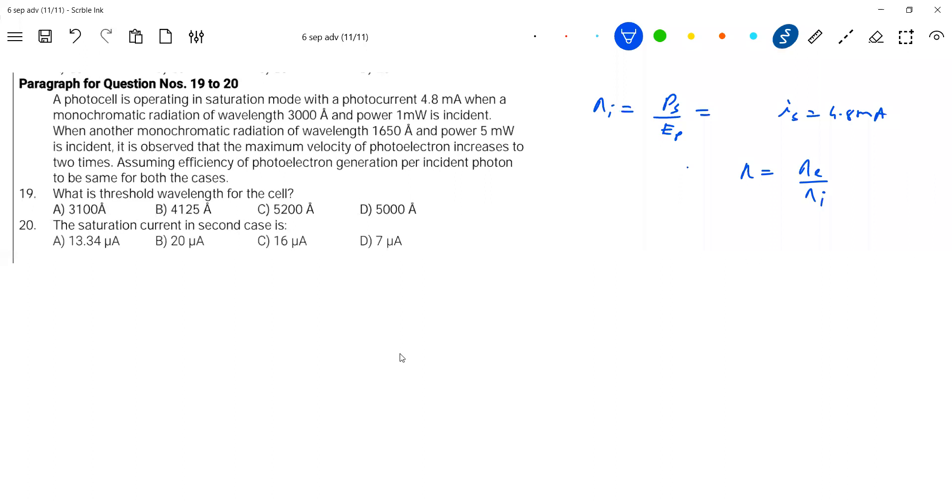Saturation current for second case, I_sc dash, should be equal to eta times lambda 2. Or directly use power of the source instead of all this.